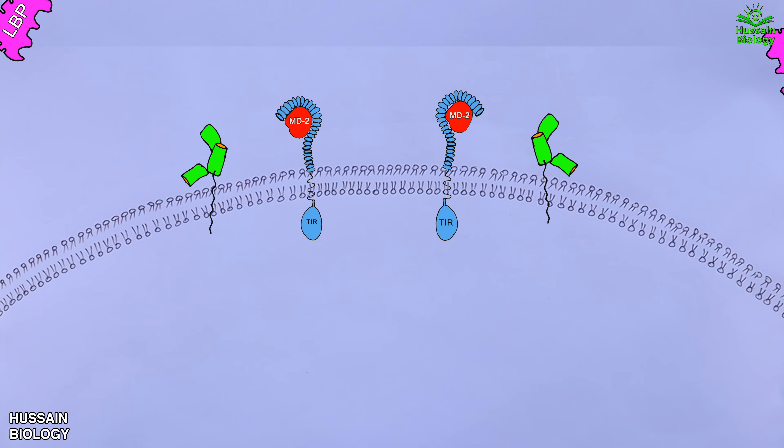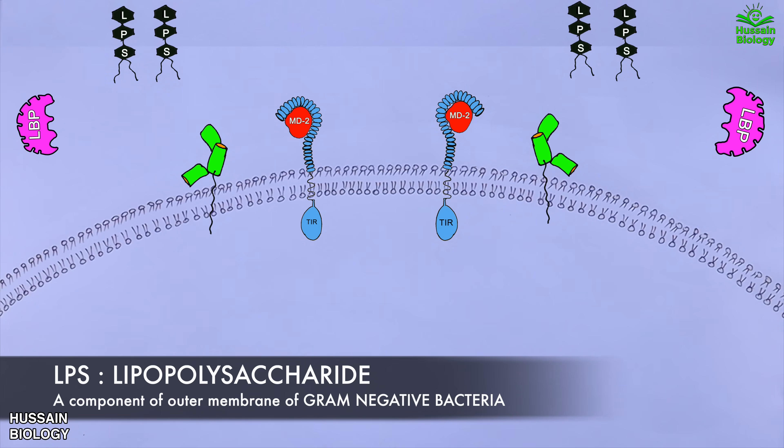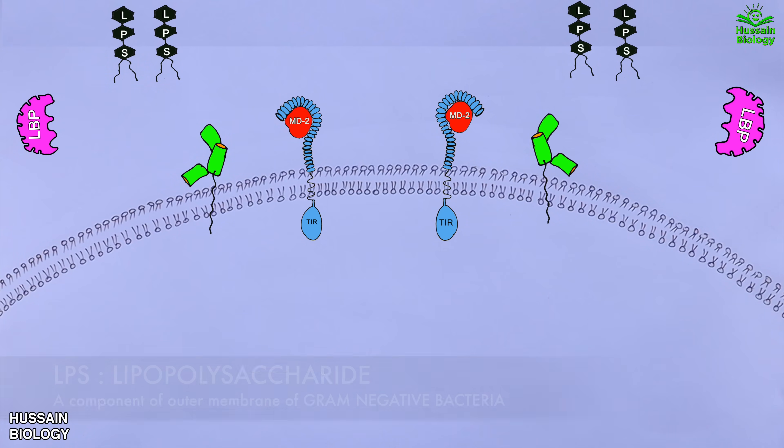Now within the extracellular fluid we have the LBP that's lipopolysaccharide binding protein. And now to drive the signaling pathway we have LPS molecule from pathogen. It is the structural component of gram-negative bacteria. Now first of all this LPS molecule from pathogen binds with the LBP that's lipopolysaccharide binding protein shown in the diagram.